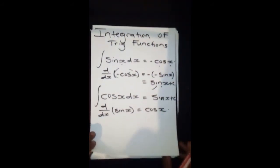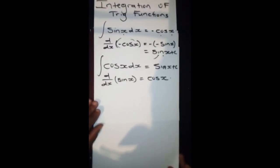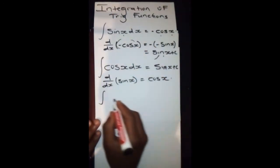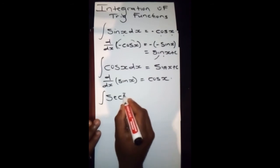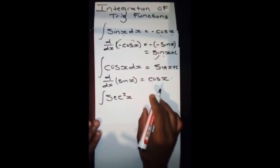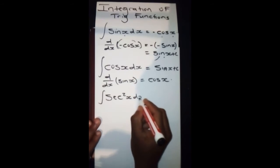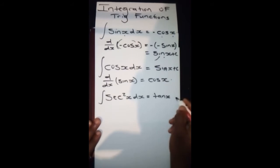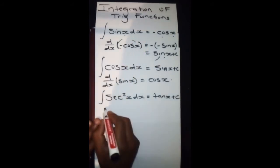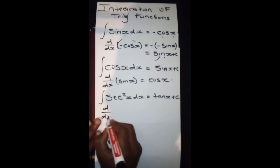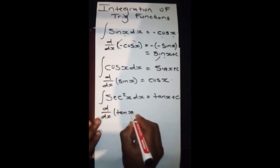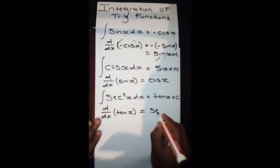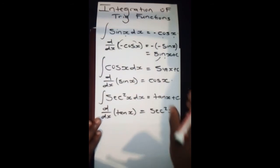Then moving forward, we've got sec²(x)dx, which gives us tan(x) plus C. This is simply because d/dx of tan(x) is equal to sec²(x).